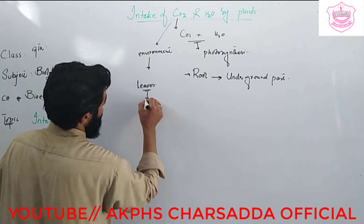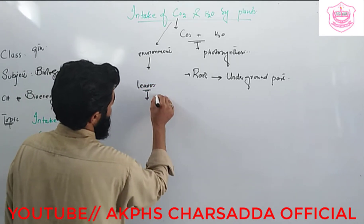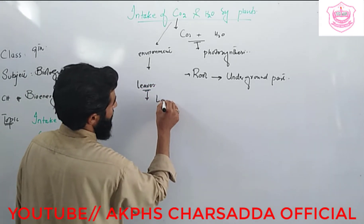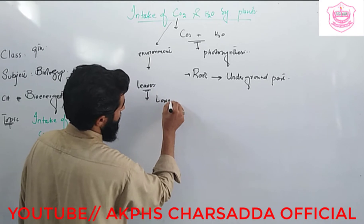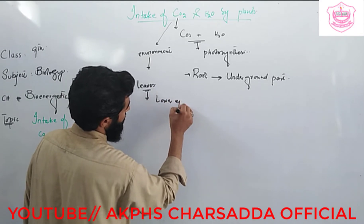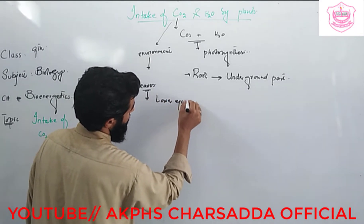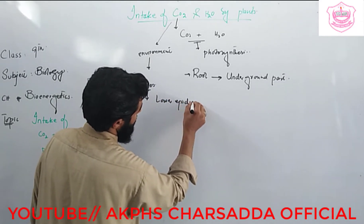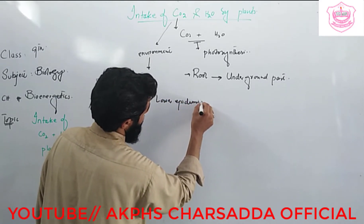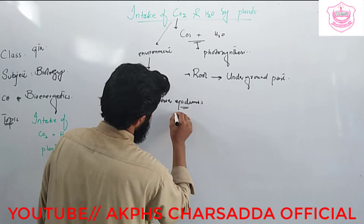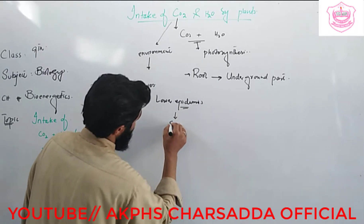CO2 enters the plant through a pore present in the lower epidermis of the leaves. That pore is known as the stomata.